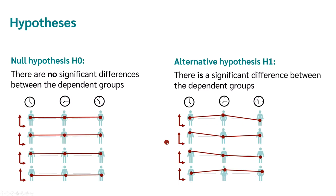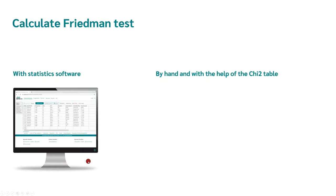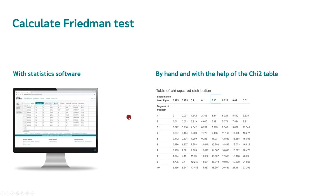As already mentioned, the Friedman test does not use the true values but the ranks. We will go through the formula behind the Friedman test in a moment. For the calculation, you can use Datatab or calculate it by hand. Hardly anyone will calculate it by hand, but doing so helps you understand how the test works — and don't worry, it's not that complicated.